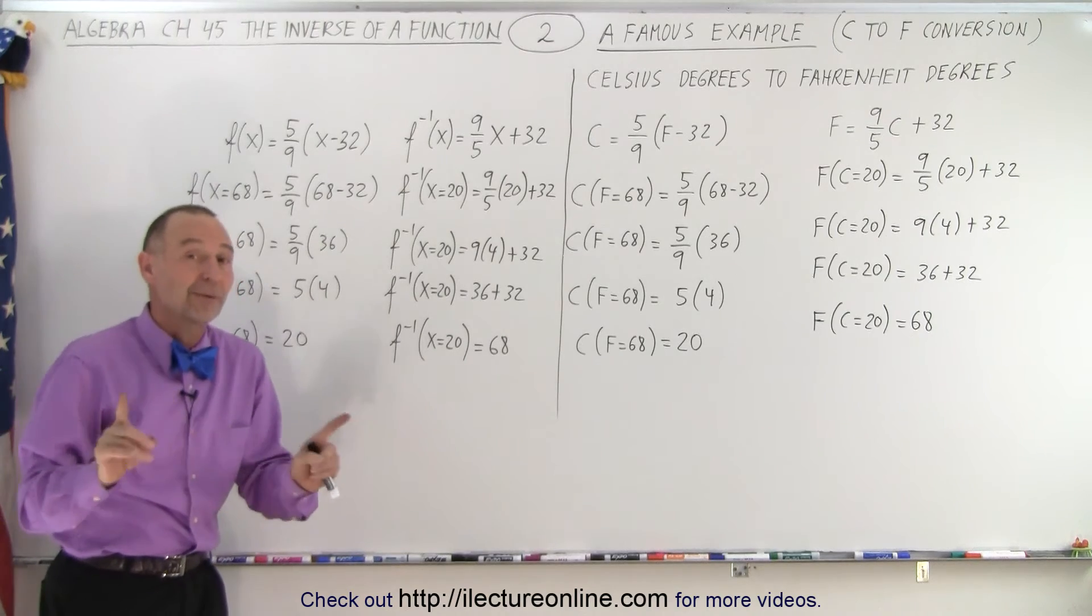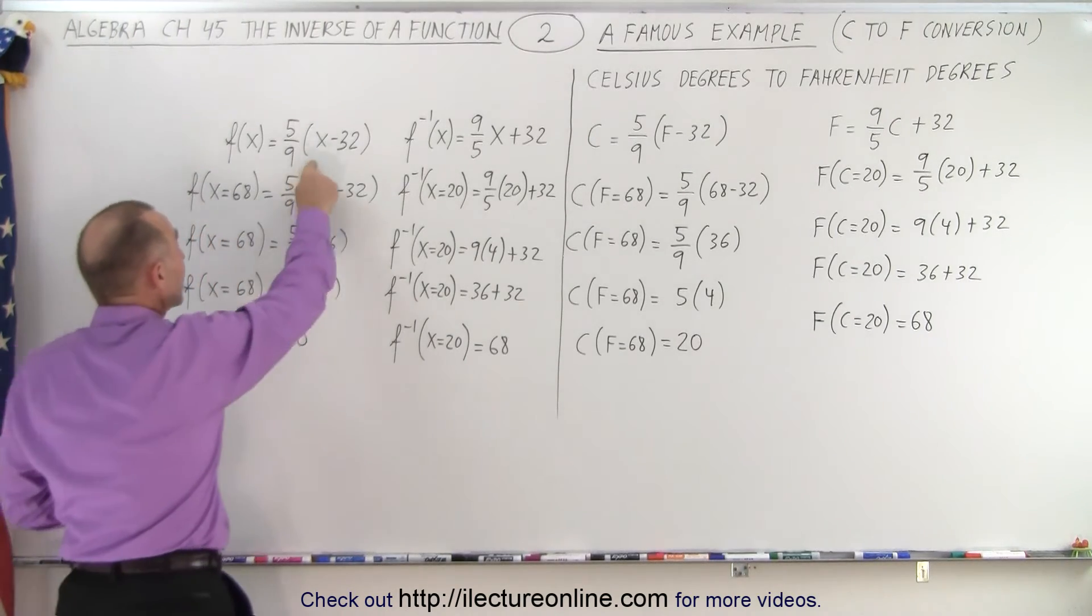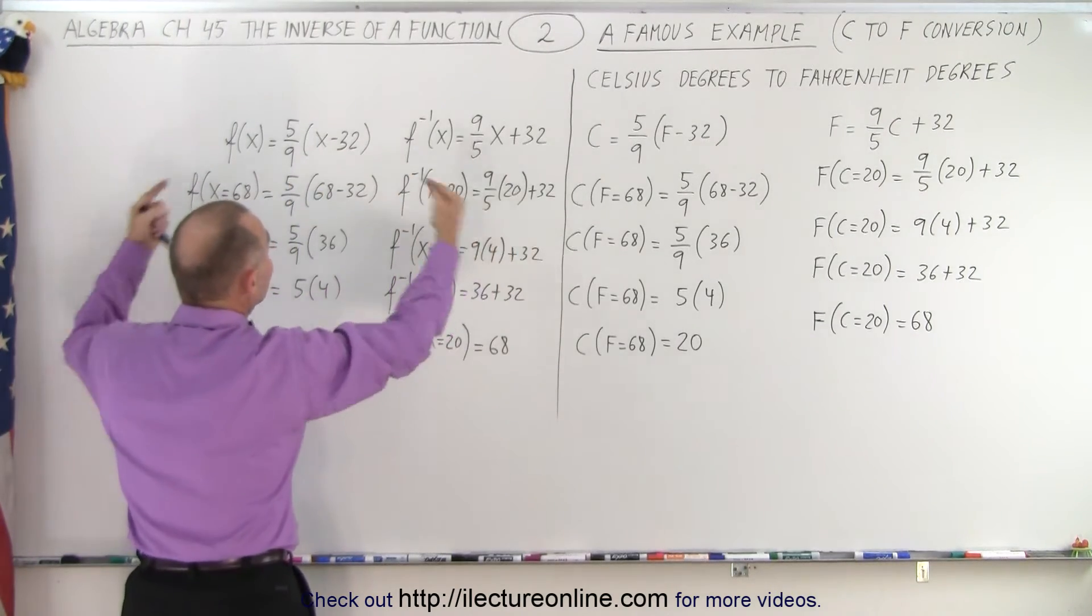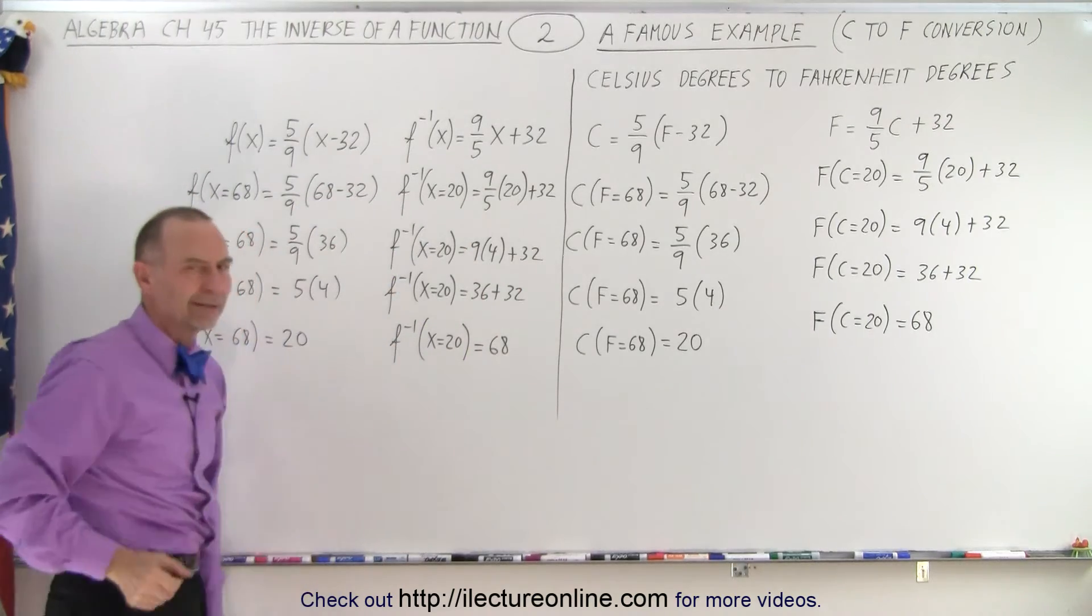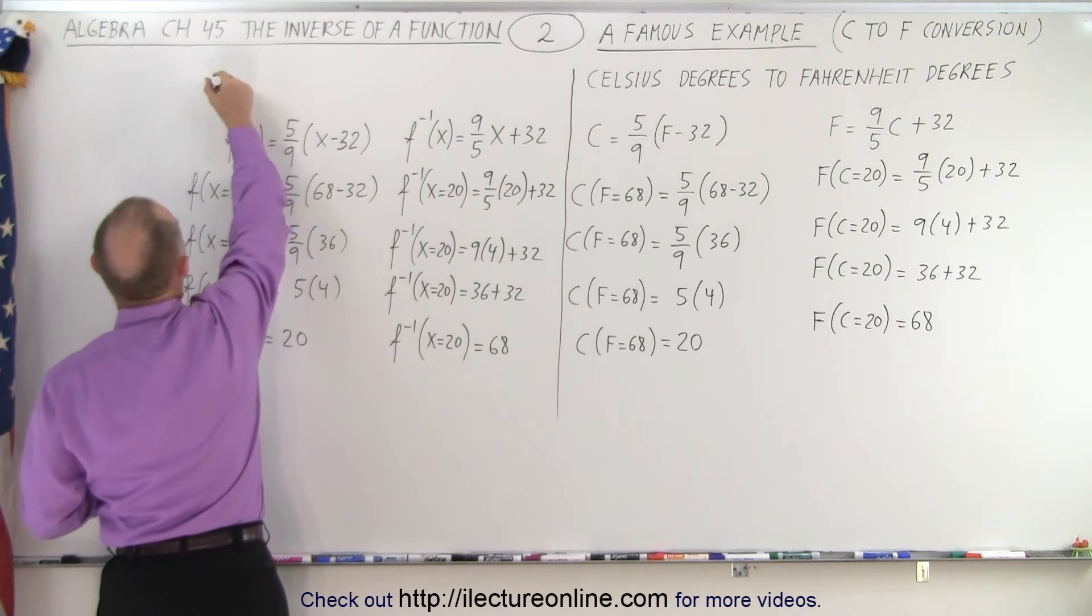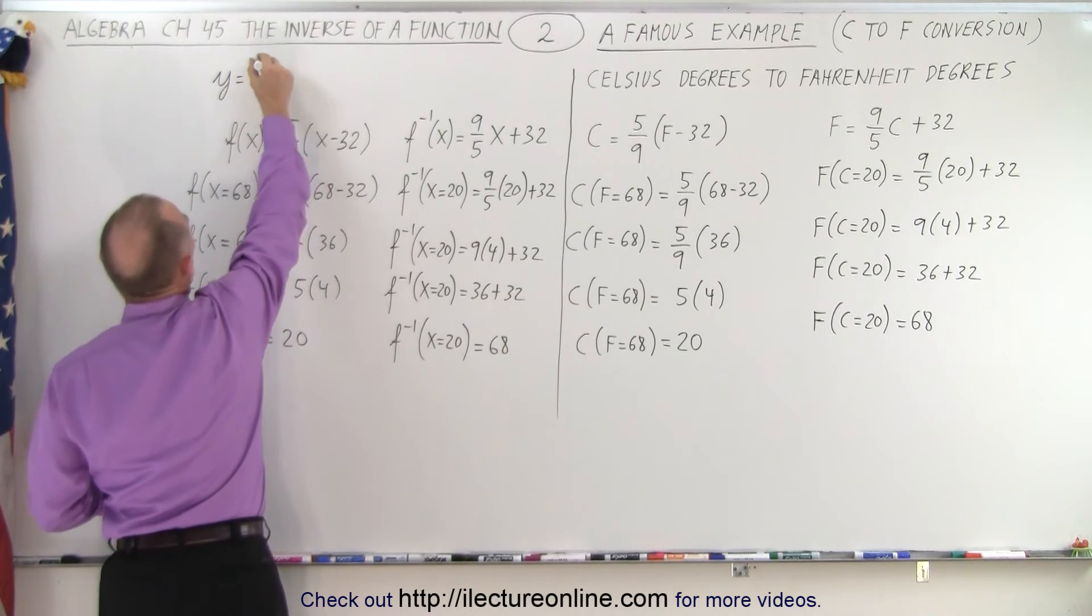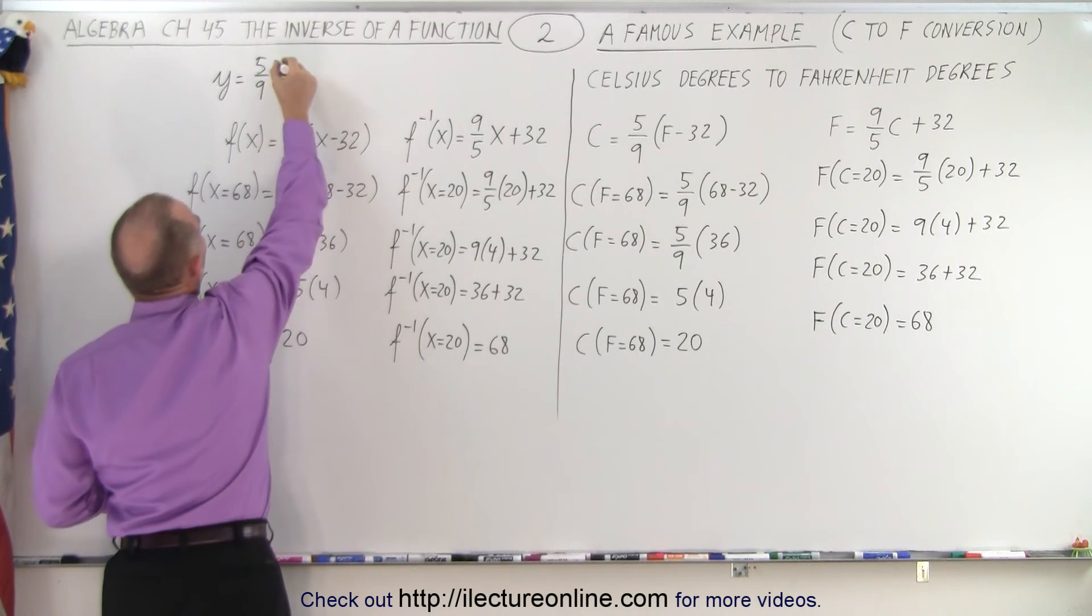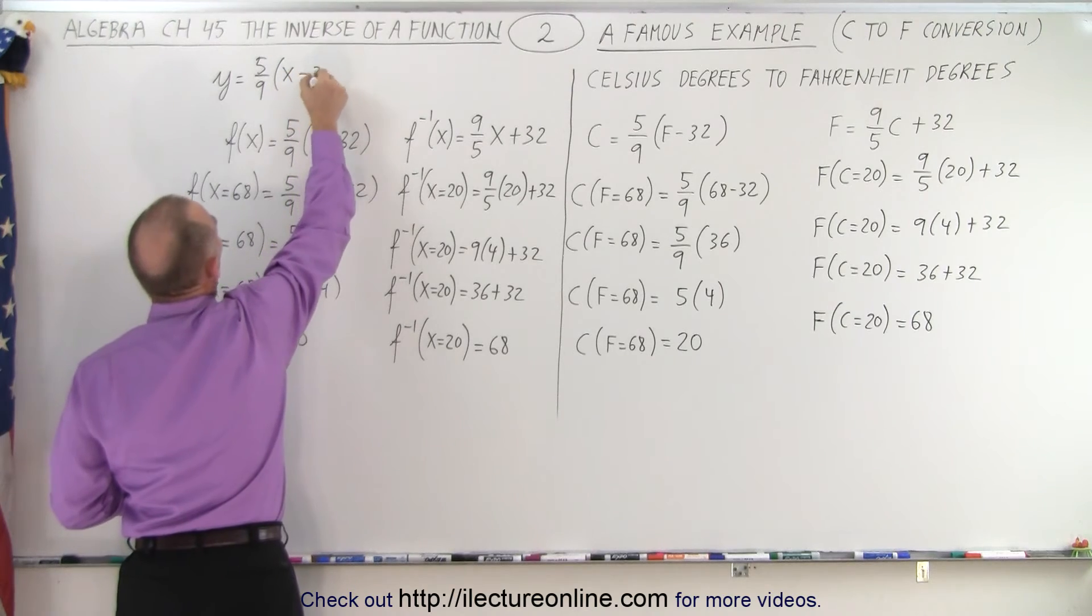And of course in the first video we already saw that in order to go from here to here, what did we do? We interchange the x's and y's. Matter of fact, why don't we just do that here. All right, we'll write y is equal to 5 over 9 times (x minus 32).